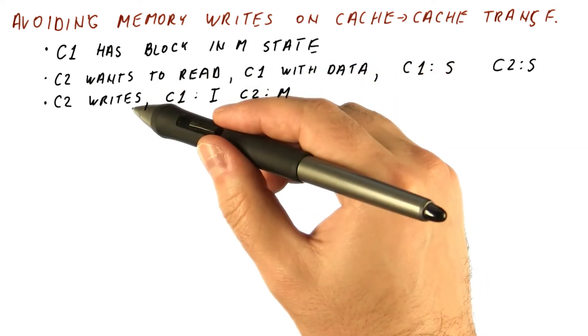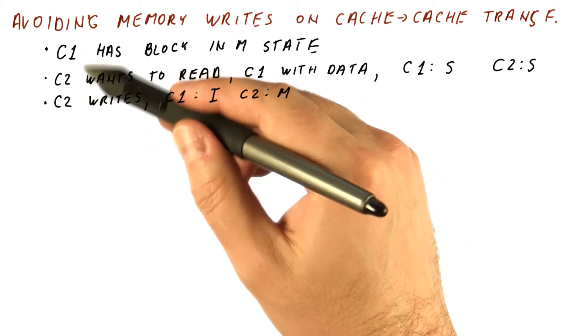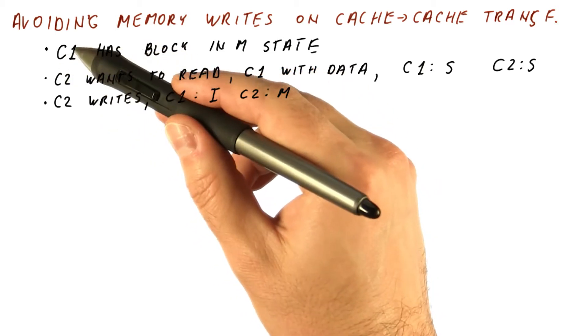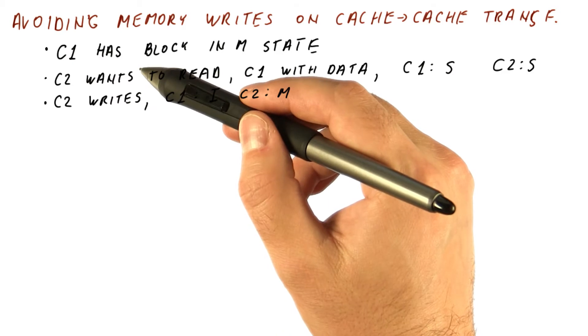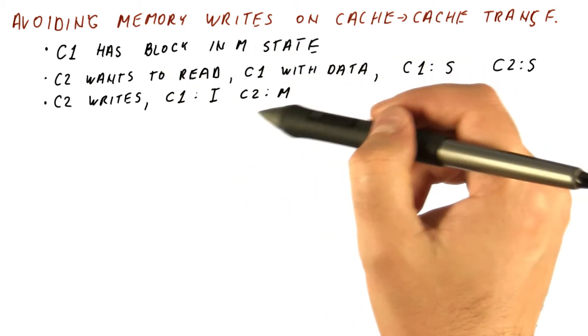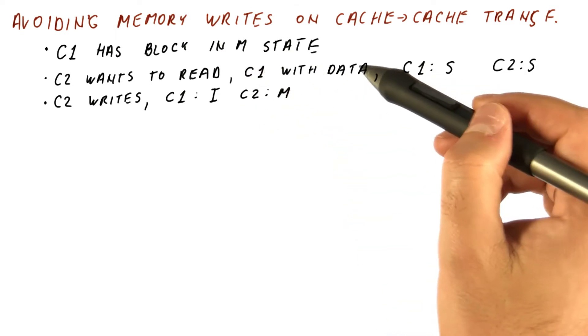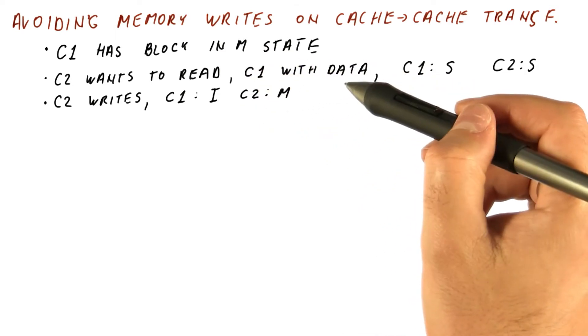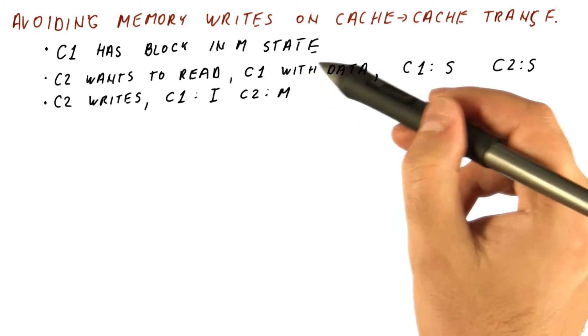And then let's say this read-write behavior moves to another core like C1. So if one core reads and writes, then another one reads and writes, and so on, we can have a repetition of this. The data is moving around the caches, but the problem is every time it moves between caches, the memory also gets written.